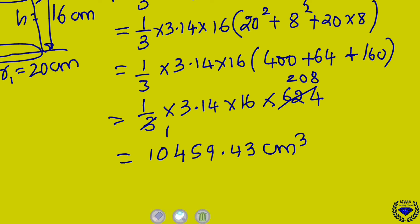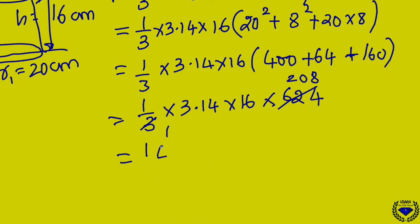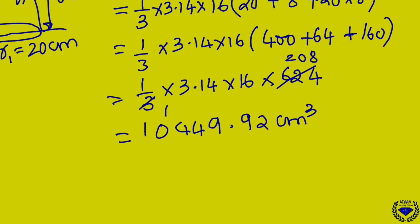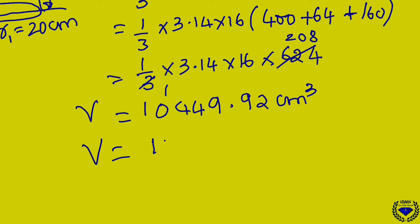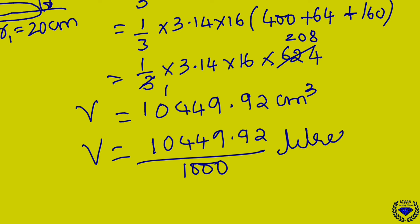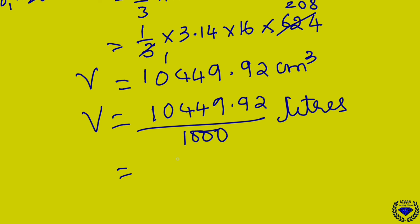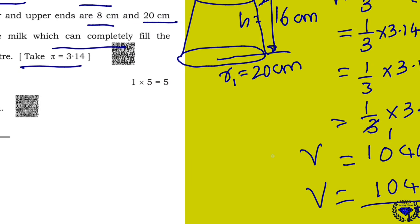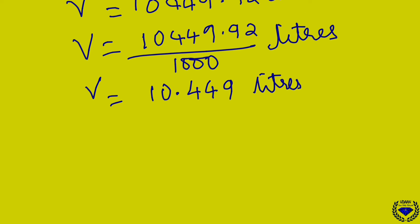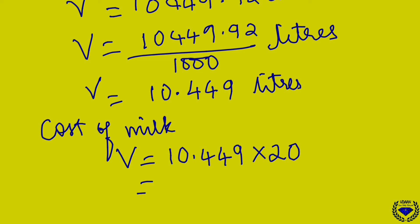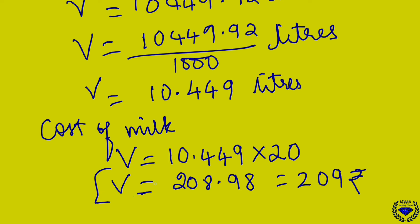Converting to liters: divide by 1000 to get approximately 10.449 liters. The cost of milk at 20 rupees per liter is 10.449 × 20 = 208.98, which is approximately 209 rupees. So the cost of milk is 209 rupees. I hope you got this. Thank you so much.